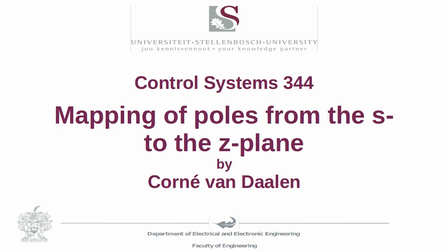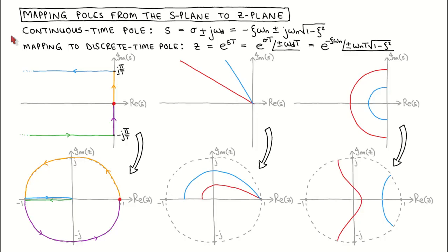In today's video we further investigate the meaning of the location of the poles in the z-plane by looking at the mapping of a continuous time system's poles in the s-plane to the z-plane. We have seen that the Laplace transform of a sampled signal can be interpreted as the z-transform if we choose z equal to e to the power sT, where T is the sampling period. The impulse invariant transformation amounts to choosing the poles of the digital controller by transforming the poles of the analog controller using this transformation.